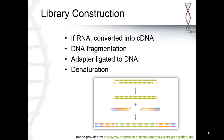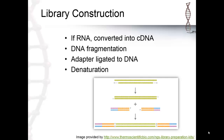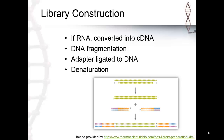The first step in the workflow is library construction. While there are a number of options available, the process is fairly standard and generally involves taking DNA, or RNA converted to cDNA, fragmenting it into uniform size — generally about 200 to 400 base pairs — and then adding sequencing adapters. Ion torrent has specific kits for a variety of applications, including DNA fragmentation for small genomes, total RNA sequencing, and cancer-specific targeted sequencing.